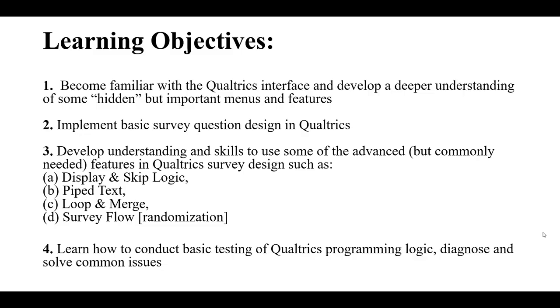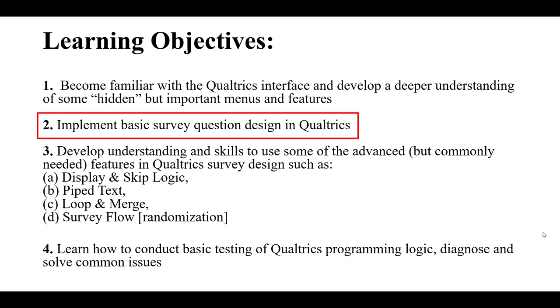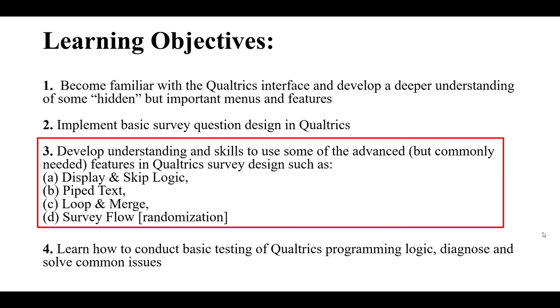In this Qualtrics tutorial you're going to become familiar with the Qualtrics interface and develop a deeper understanding of some hidden but extremely important menus and features, even if you're just conducting basic online surveys. We'll actually implement some basic survey design questions in Qualtrics, and more importantly we're going to develop skills to use more advanced but commonly needed features such as display and skip logic, pipe text, loop and merge, and survey flow or randomization.